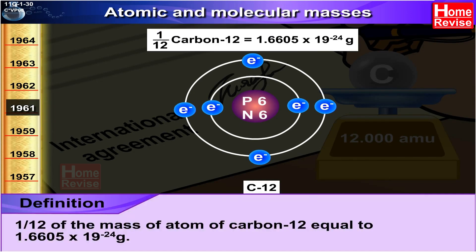One amu is defined as one upon twelve of the mass of an atom of carbon-12, equal to 1.6605 multiplied by 10 raised to minus twenty-four grams.